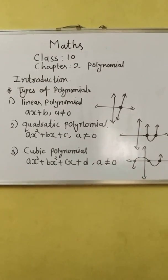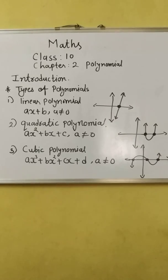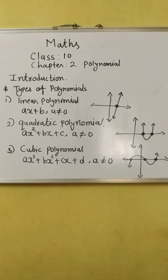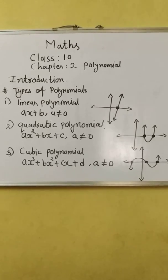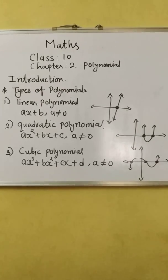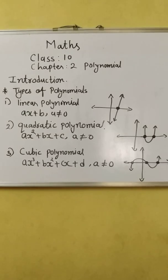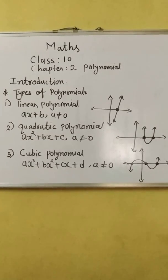But maximum linear polynomial has one zero because it has degree as 1, quadratic polynomial has zeros 2, and the cubic polynomial has maximum three zeros.